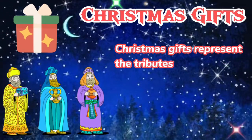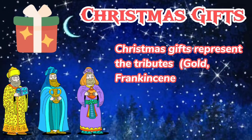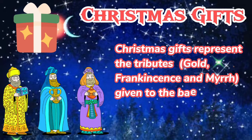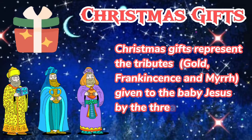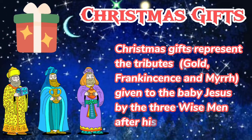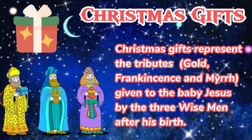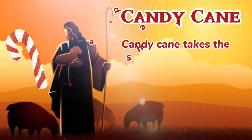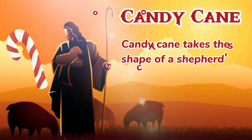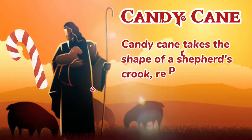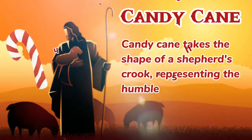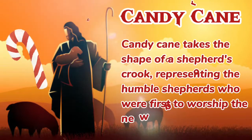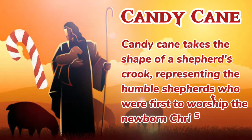Christmas gifts represent the tribute — frankincense and myrrh — given to the baby Jesus by the three wise men after his birth. The candy cane takes the shape of a shepherd's crook, representing the humble shepherds who were first to worship the newborn Christ.